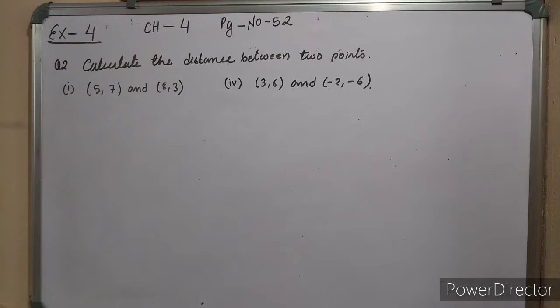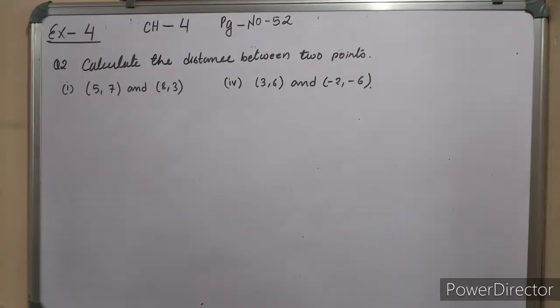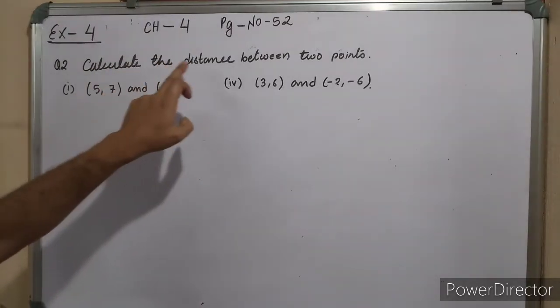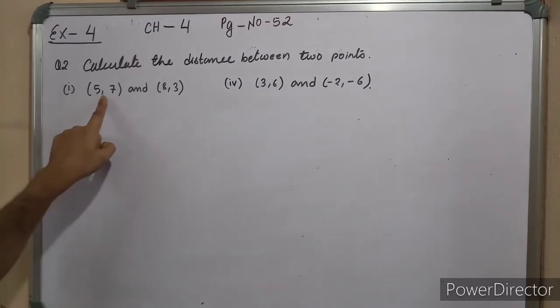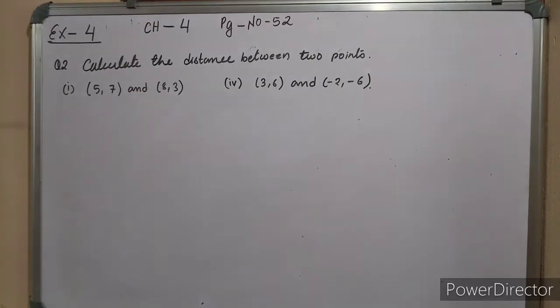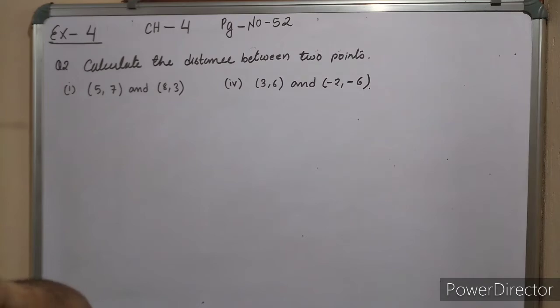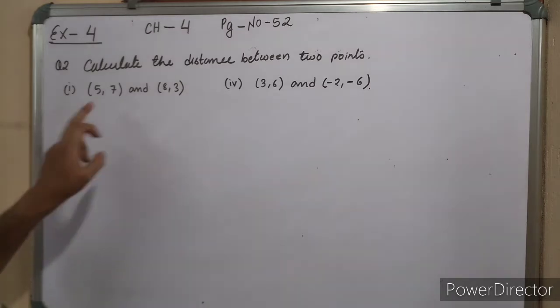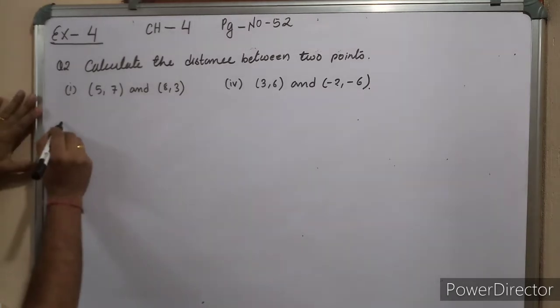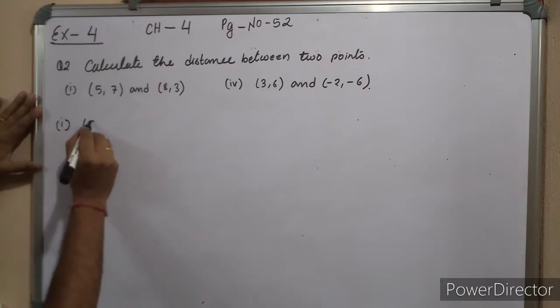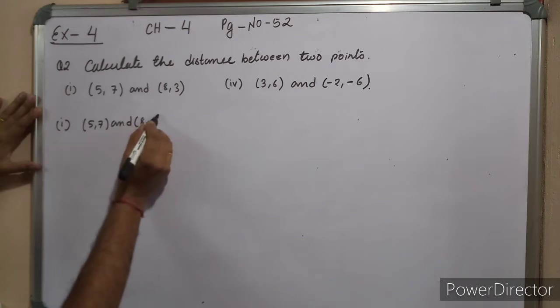Question number 2: Calculate the distance between the two points. Question number 1: (5, 7) and (8, 3). Question 2: (3, 6) and (-2, -6). Let's do the first question. The first point is (5, 7) and the second is (8, 3).